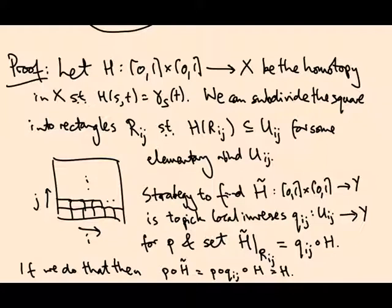What is not clear is that I can pick local inverses Q_ij in such a way that H tilde is continuous. Right, I'm trying to basically define a continuous map first here, then here, then here, then here. It needs to be continuous, so it needs to agree on the edges between these rectangles.